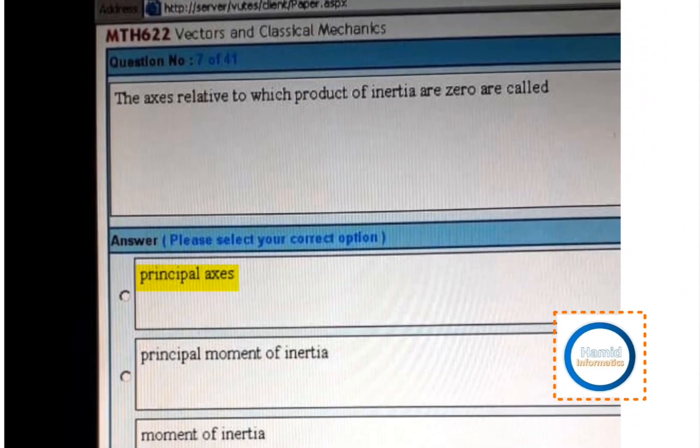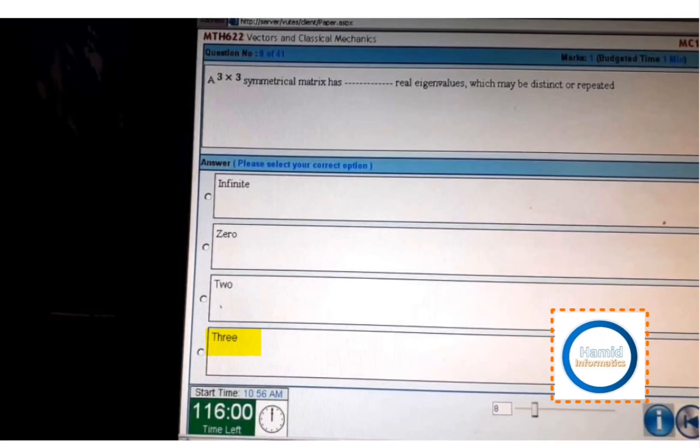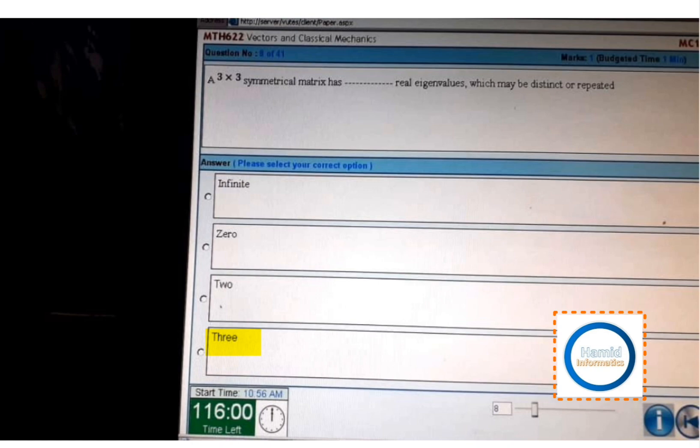Next, a 3 by 3 symmetrical matrix has three real eigenvalues which may be distinct or repeated.